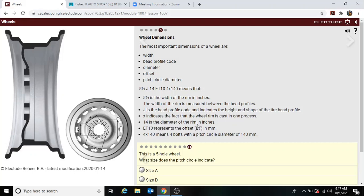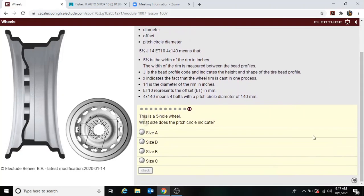14 is the diameter of the rim in inches. ET represents the offset in millimeters. 4 by 140 means four bolts with the pitch circle diameter of 140 millimeters.